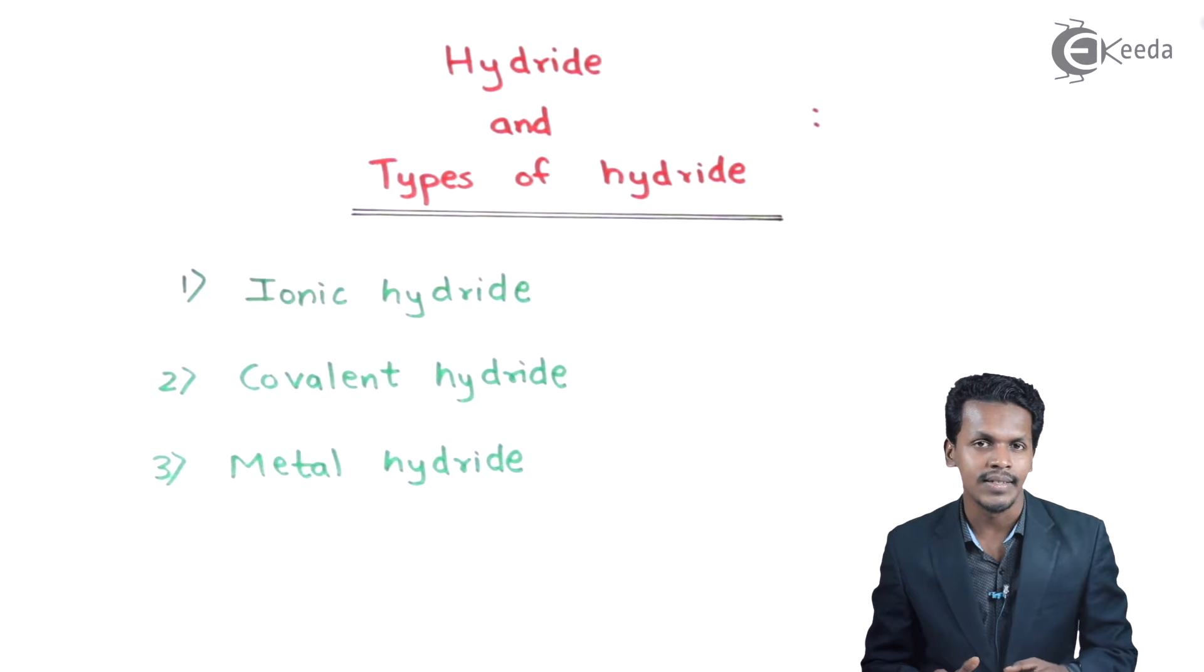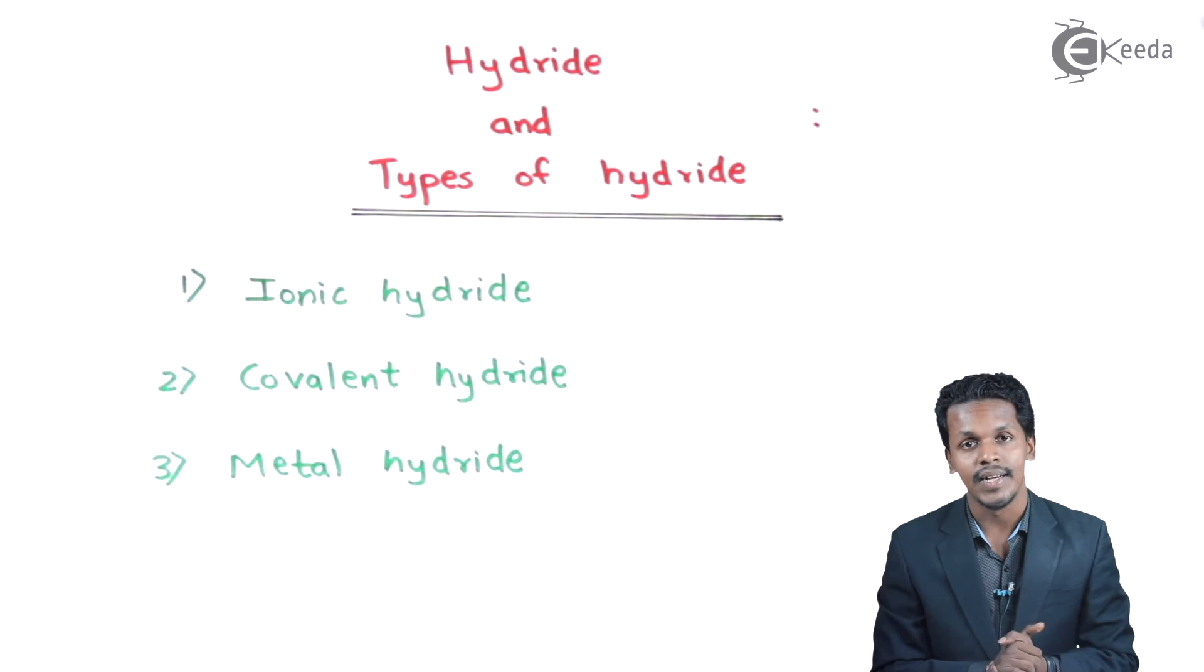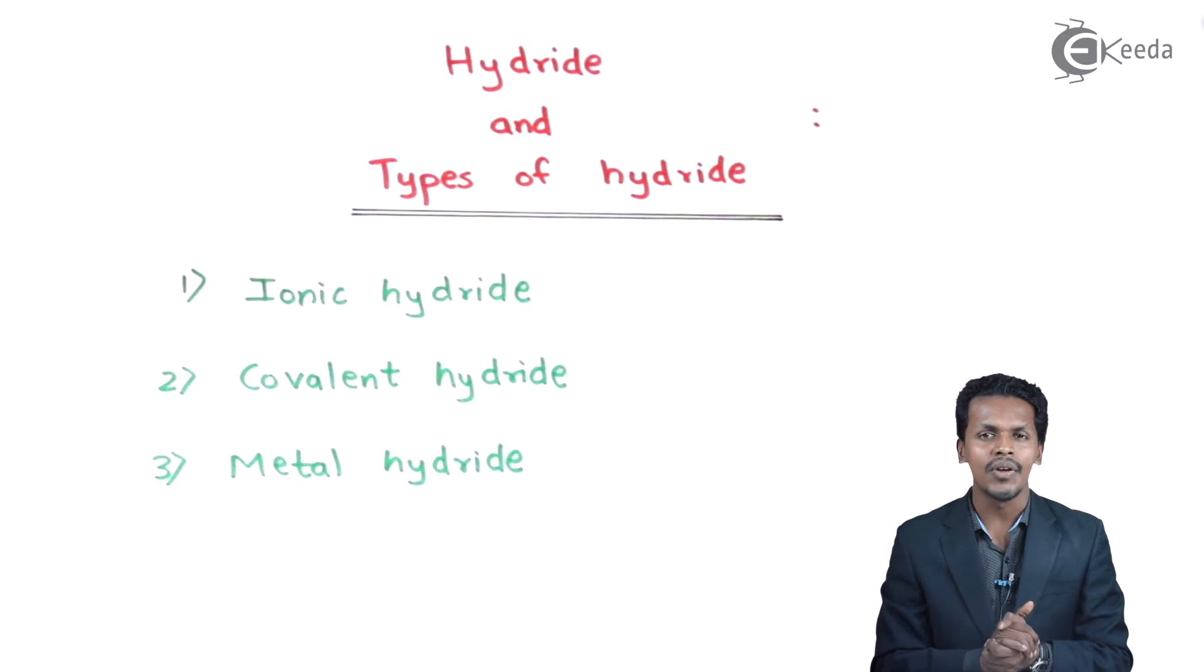Talking about ionic hydrides - these are where hydrogen combines with s-block elements to form an ionic nature hydride. For example, NaH (sodium hydride) is an example of ionic hydride.